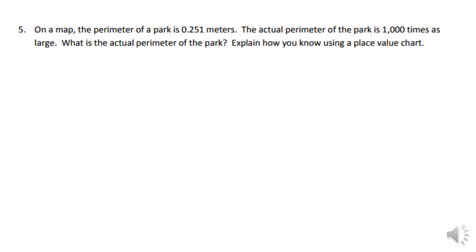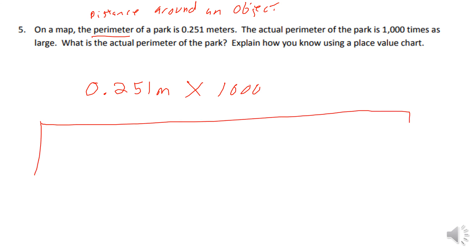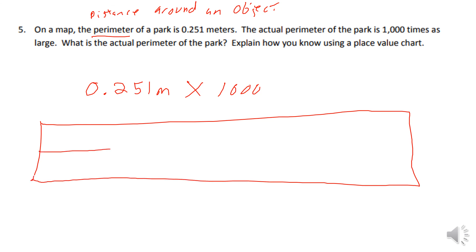Question five: on a map the perimeter of a park is 0.251 meters (251 thousandths). The actual perimeter is 1,000 times as large. Perimeter is the distance around an object — the total distance around the park. They said the actual perimeter was 1,000 times as large, so we multiply 0.251 by 1,000.